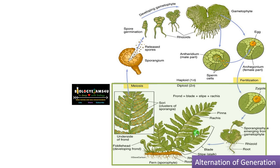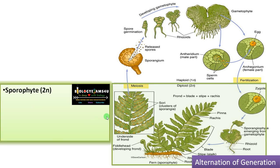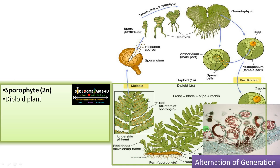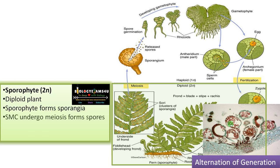Now let us see what a sporophyte and a gametophyte actually are. The sporophyte is a diploid plant where two sets of chromosomes are present. In ferns the dominant phase is the sporophytic phase. The sporophyte forms spores on the underside, as in the case of ferns, as sorae. This is the sporangia — a spore-bearing structure. Inside the sporangia, spore mother cells, which are diploid, undergo meiosis forming haploid spores.